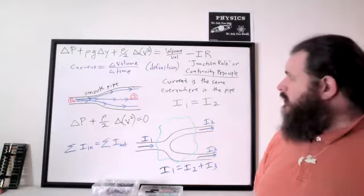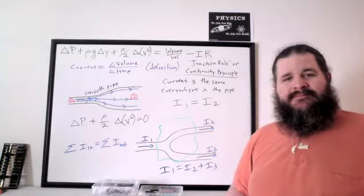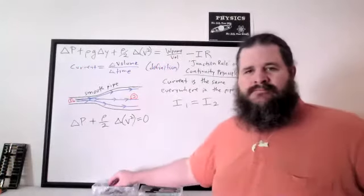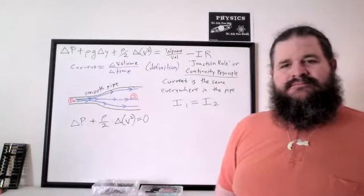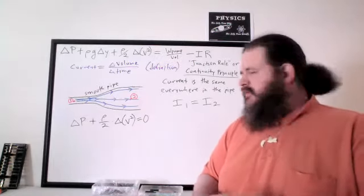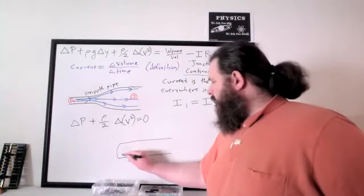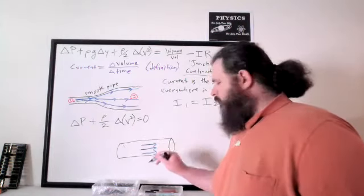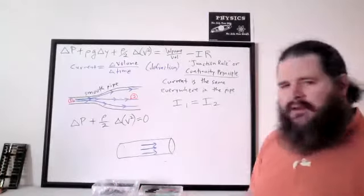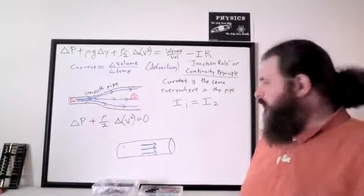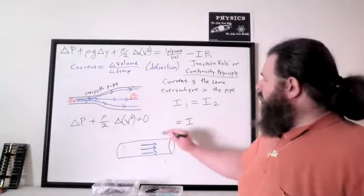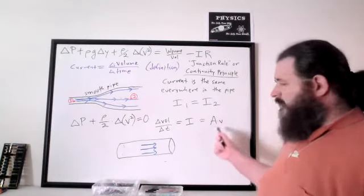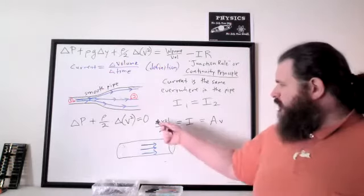There's another formula for current. Current is defined as volume over time, but what else does current equal? If you take a cylindrical pipe with fluid flowing through, it should be velocity times area. These are actually the same thing: current is defined as change in volume over change in time, but also happens to equal area times speed — small v for speed, as opposed to volume which is usually capital V.